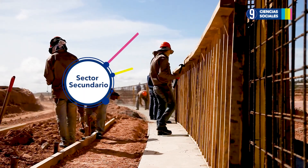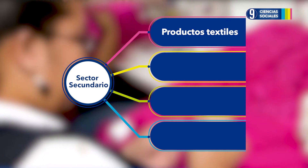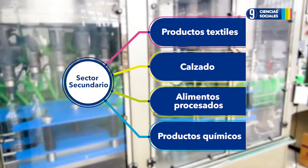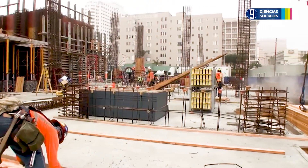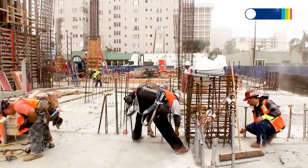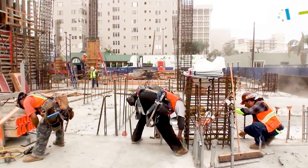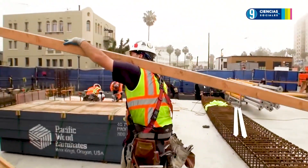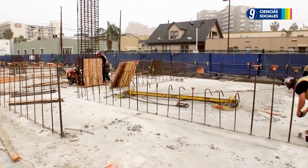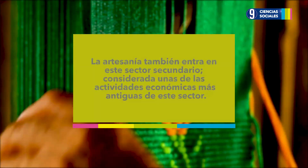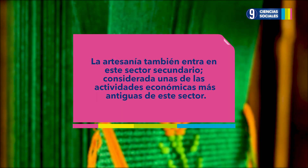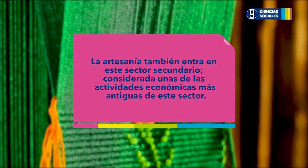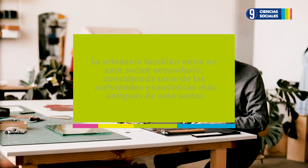Como ejemplo tenemos los productos textiles, calzado, alimentos procesados, productos químicos, entre otros. La industria de la construcción también forma parte de este sector, debido a que se dedica a la creación de edificios e infraestructura utilizando los recursos que obtiene del sector primario. La artesanía también entra en este sector secundario, considerada una de las actividades económicas más antiguas de este sector.